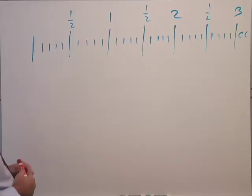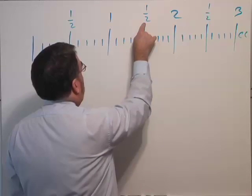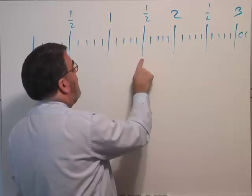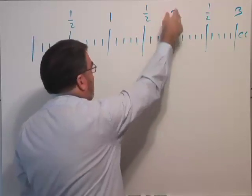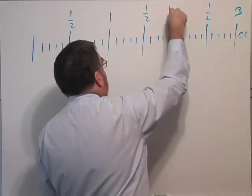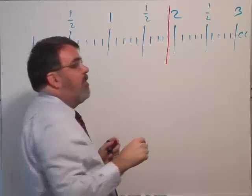So let's see, where would be 1.9 CCs? All right, so we go to one and one half. This is 1.5, 1.6, 1.7, 1.8, 1.9, right here. And the next one would be two. So if we've counted correctly, here is 1.9 CCs.